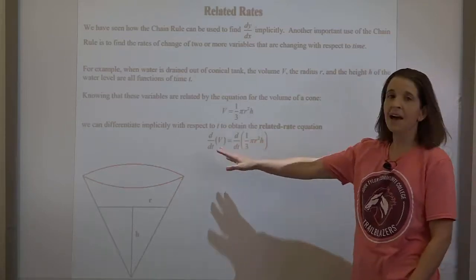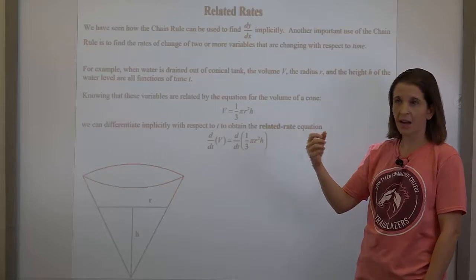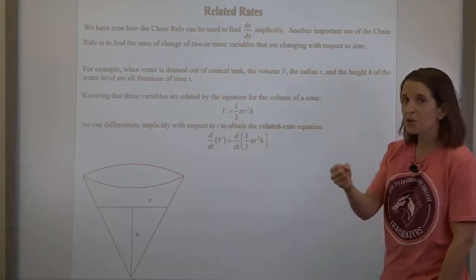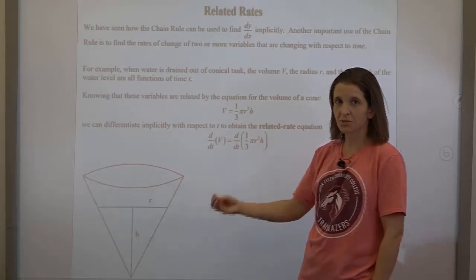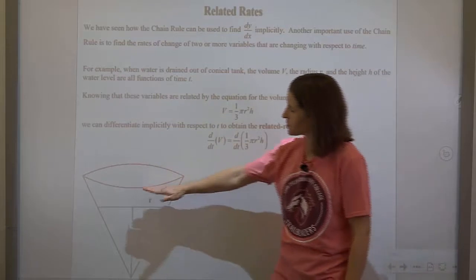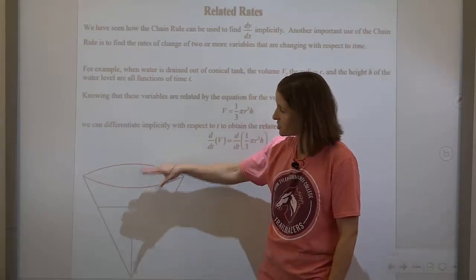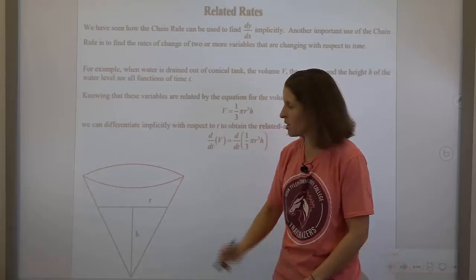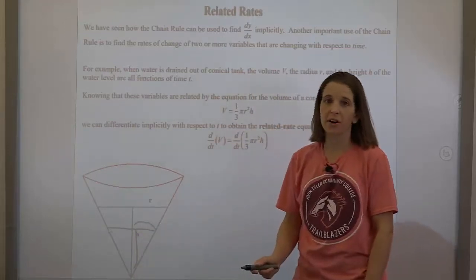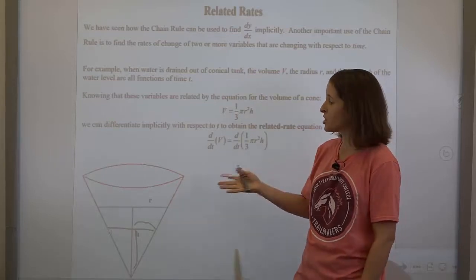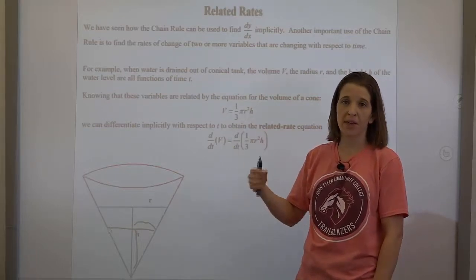For example, if I have a conical tank — one of those paper cone cups that you put water in — that's leaking out the bottom, as time elapses, not only is the volume obviously changing because you're losing the liquid, but the water level is going down, so the height is decreasing. And as you go down in a cone, the radius gets smaller. So radius, height, and volume are all changing with respect to time.